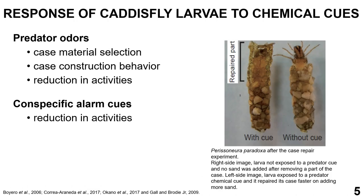Studies have shown that caddisfly larvae respond to predator-related chemical cues like predator odor and conspecific alarm cues. Predator odor has been described to affect case material selection and case construction behavior. As seen in the image on the right, in the absence of chemical cues larvae did not repair a damaged portion of the case, while those exposed to predator odor repaired the anterior portion of the case that was damaged, using the materials they were provided with.